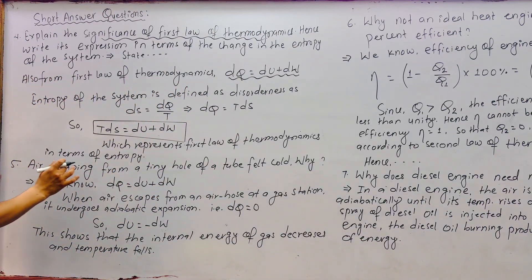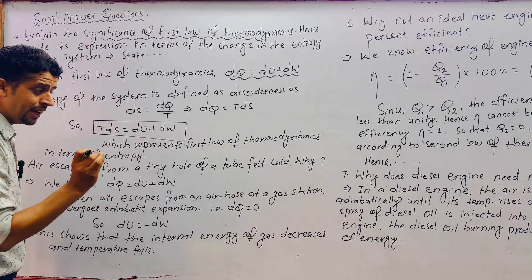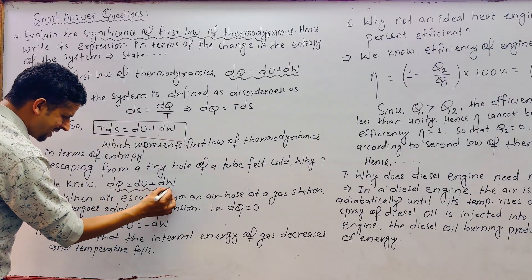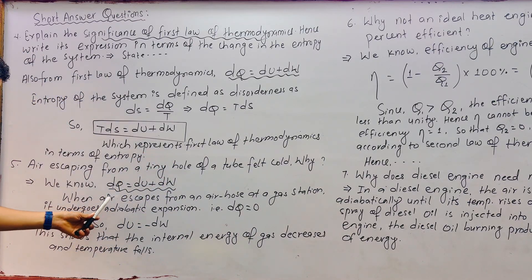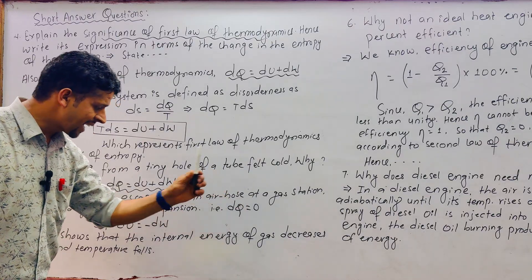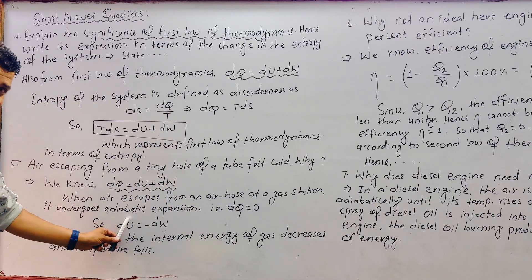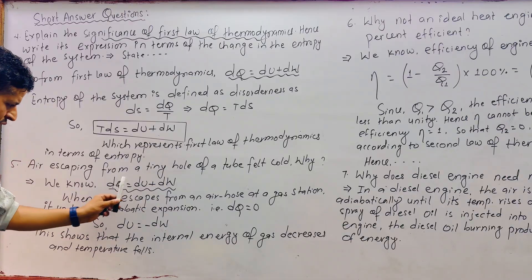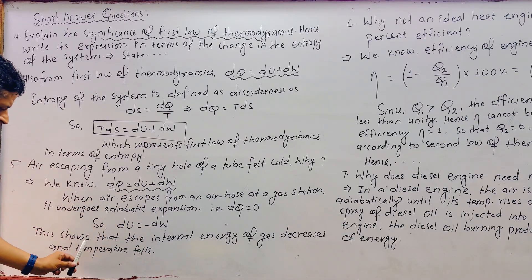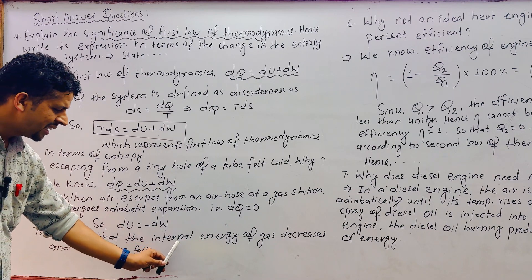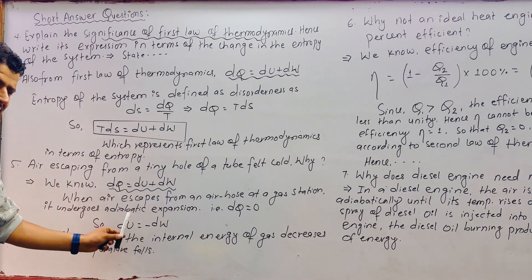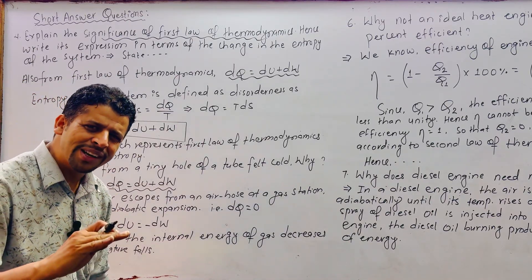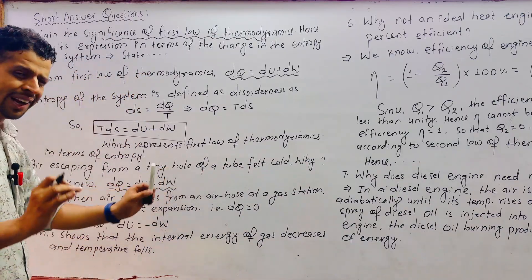Question 5: Air escaping from a tire tube feels cold. Why? From the first law of thermodynamics, dQ = dU + dW. When air escapes from a tire, it undergoes adiabatic expansion, so dQ = 0, which gives dU = -dW. This shows that the internal energy of the gas decreases, meaning temperature drops. That is why we feel cold.